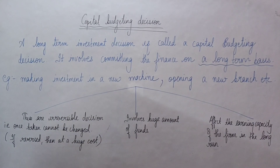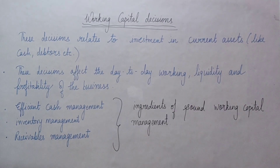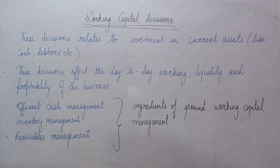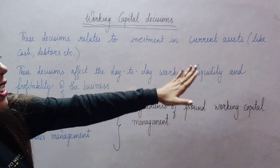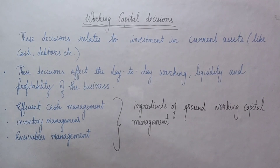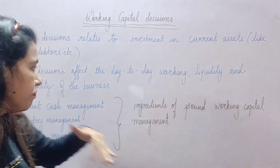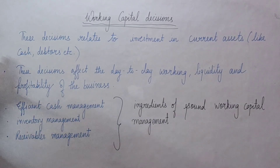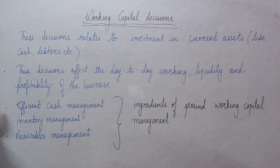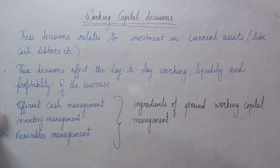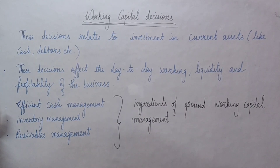Now let's move to working capital decisions. Working capital decisions are also called short-term investment decisions. These are decisions where we invest funds in current assets. These decisions relate to investment in current assets like cash, debtors, etc. These decisions affect the day-to-day working of the business.